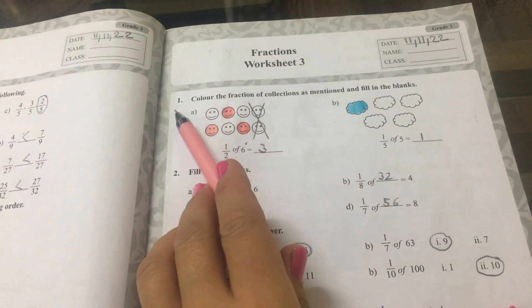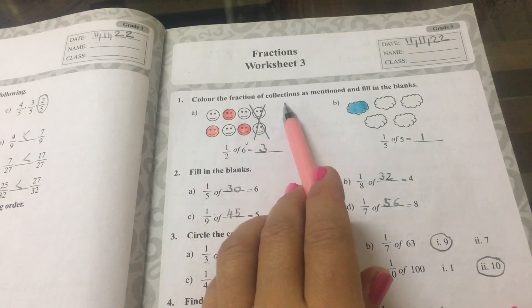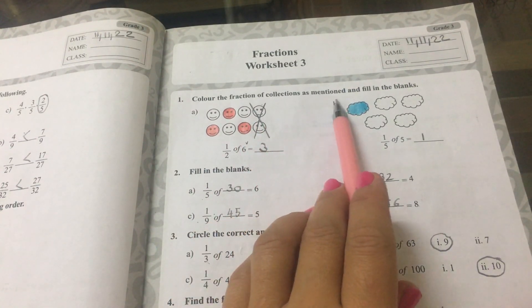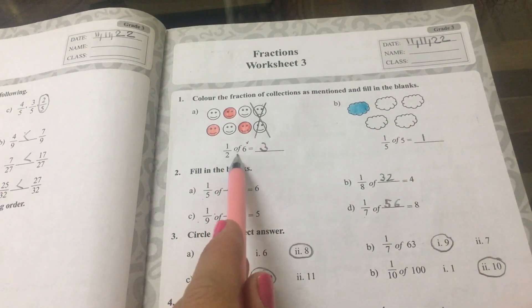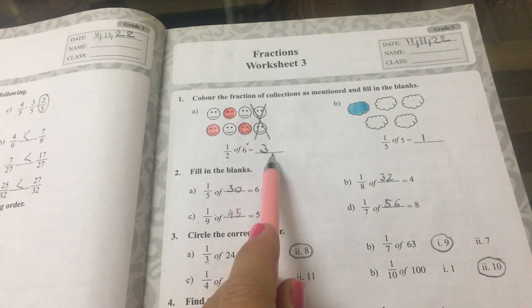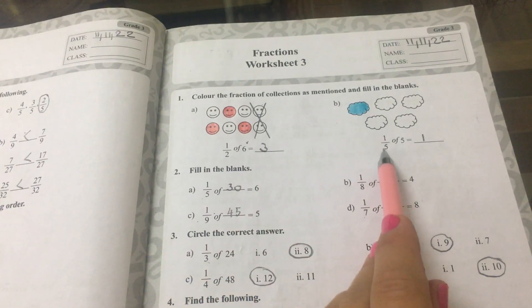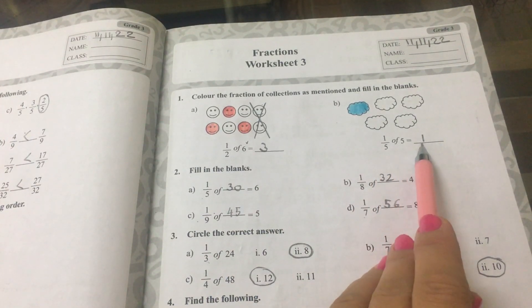Worksheet 3, question 1. Color the fraction of collections as mentioned and fill in the blanks. 1 half of 6 equals to 3, and 1 fifth of 5 equals to 1.